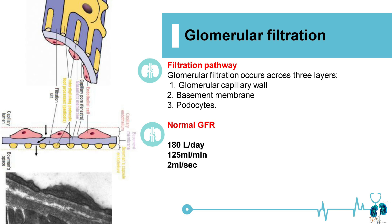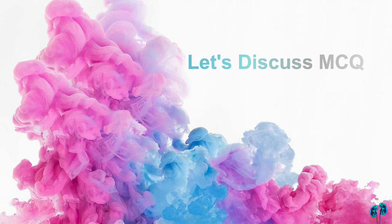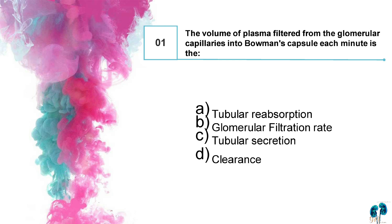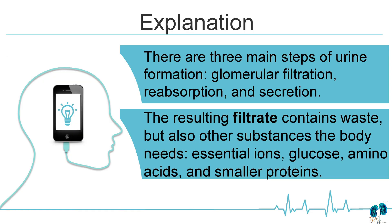Let's discuss a few multiple choice questions. The volume of plasma filtered from the glomerular capillaries into Bowman's capsule each minute is: option A, tubular reabsorption; option B, glomerular filtration rate; option C, tubular secretion; option D, clearance.